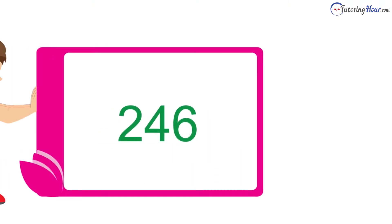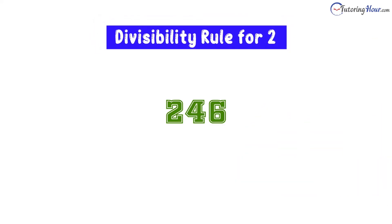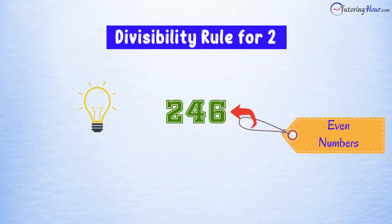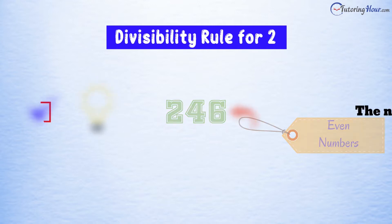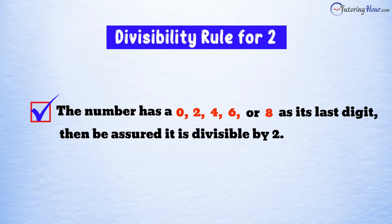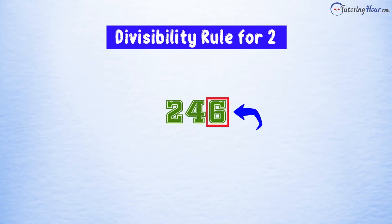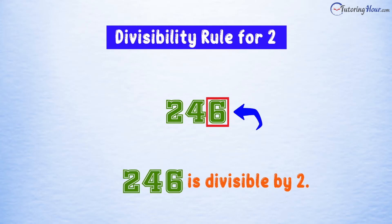Let's check if our first number, 246, is divisible by 2. The trick here is to look for even numbers. So if the number has a 0, 2, 4, 6, or 8 as its last digit, then be assured that it is divisible by 2. The number 246 has 6 as its last digit. Therefore, it is divisible by 2.